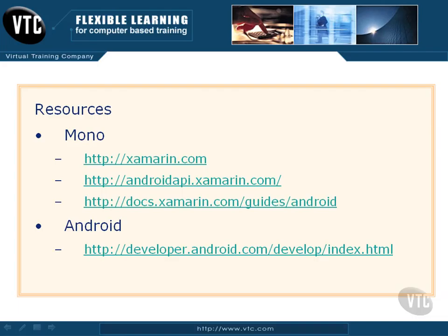So for Mono, the main site is the Xamarin site, and then there's an API link there, and also a guide area that includes some sample apps and some tutorials and some things to get you going. On the Android side, there's the Android developer site, which has a wealth of information about the API and also a ton of samples as well.